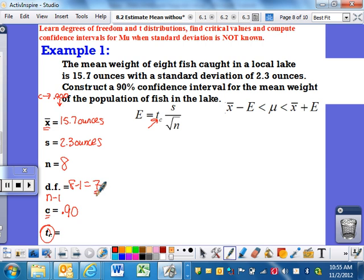So then wherever degrees of freedom of 7 is on the left, you go over, 90% down, find that critical value. And in this problem, it's going to be 1.895. So everybody hopefully can find that number, and if you can find that number, now it becomes a piece of cake.